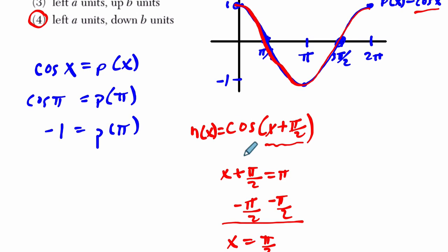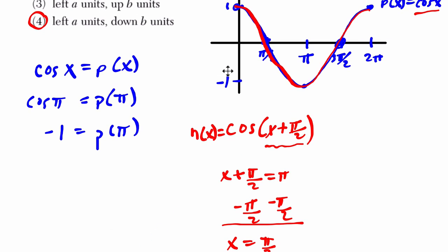Essentially, if we look at our graph, it means at π/2 now, here's π/2, the cosine is negative 1. It's moved back from here to here.